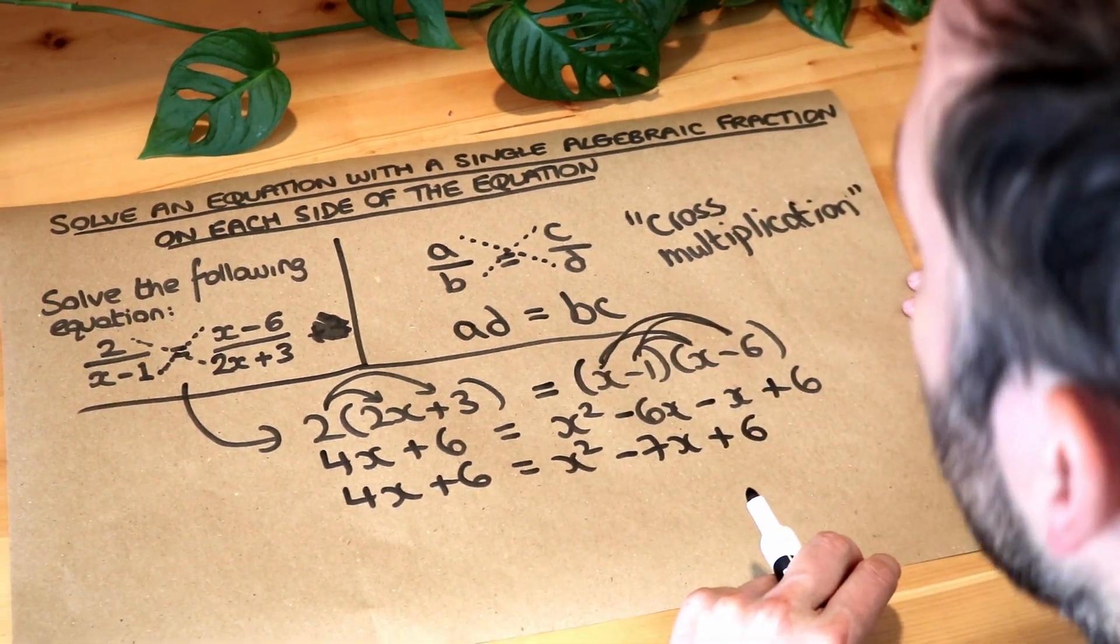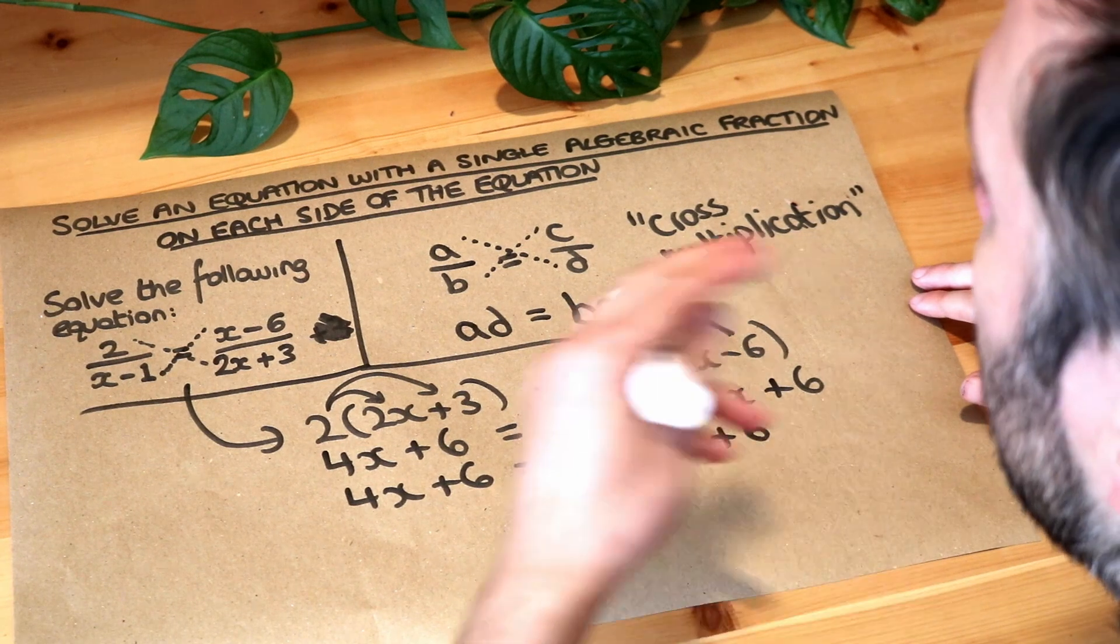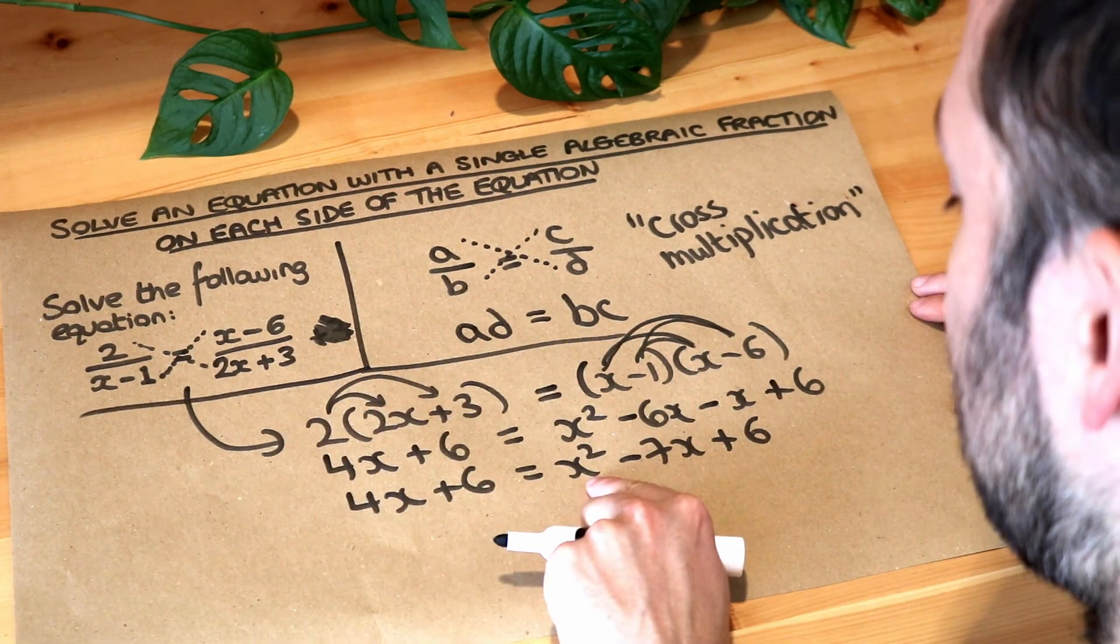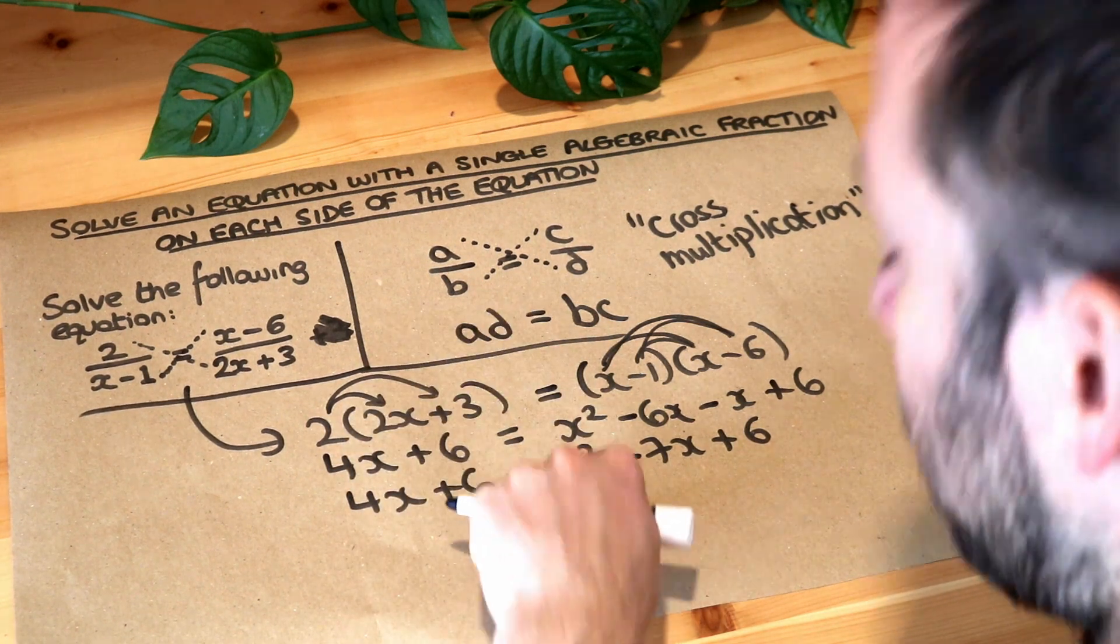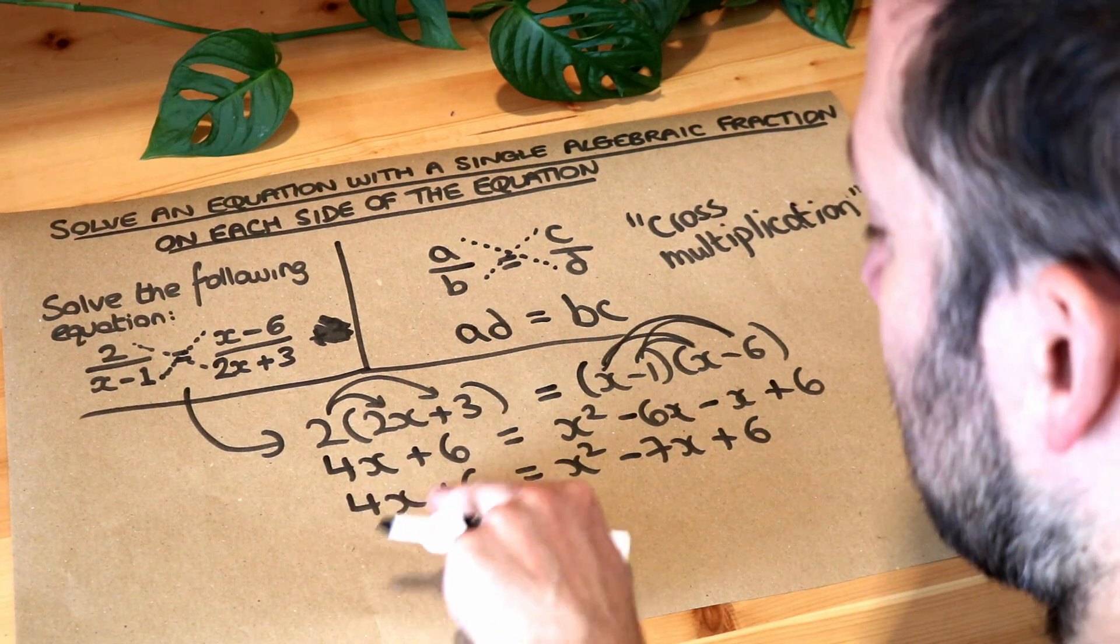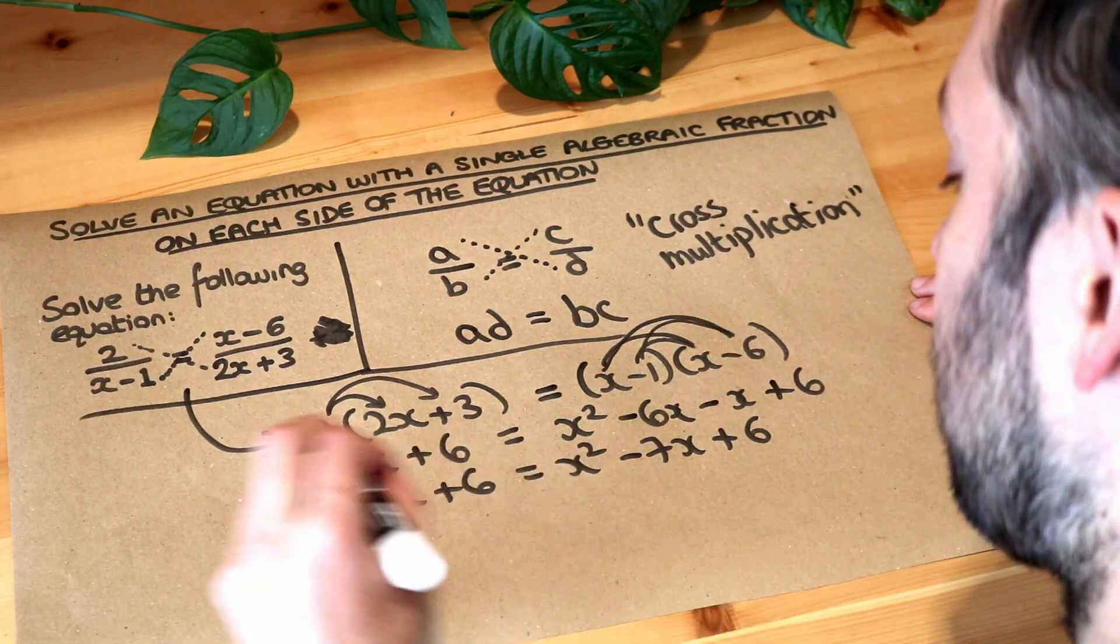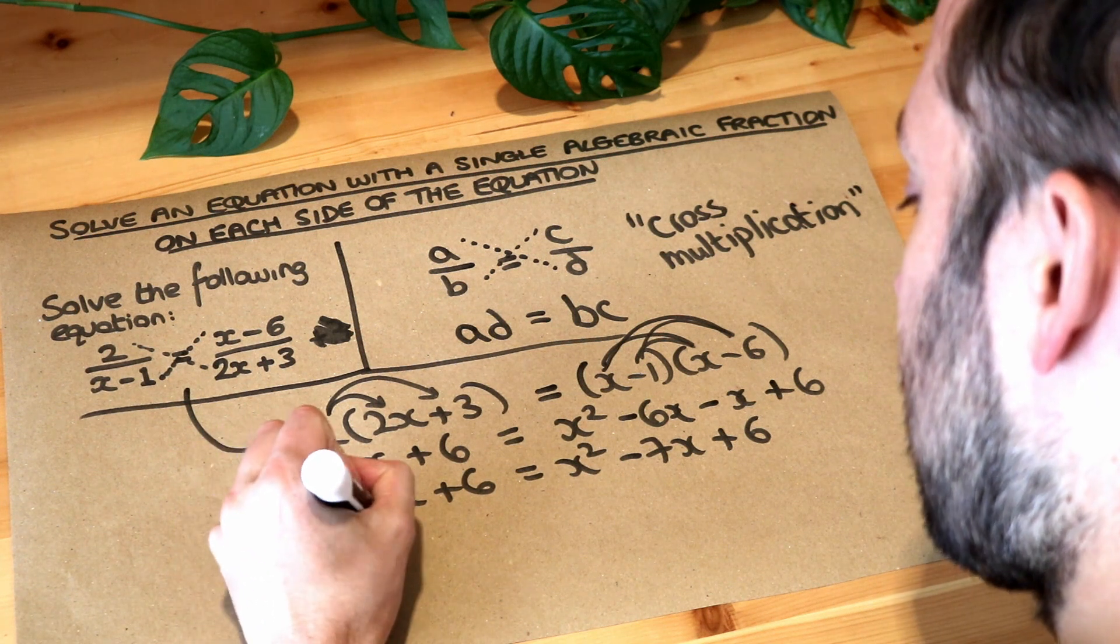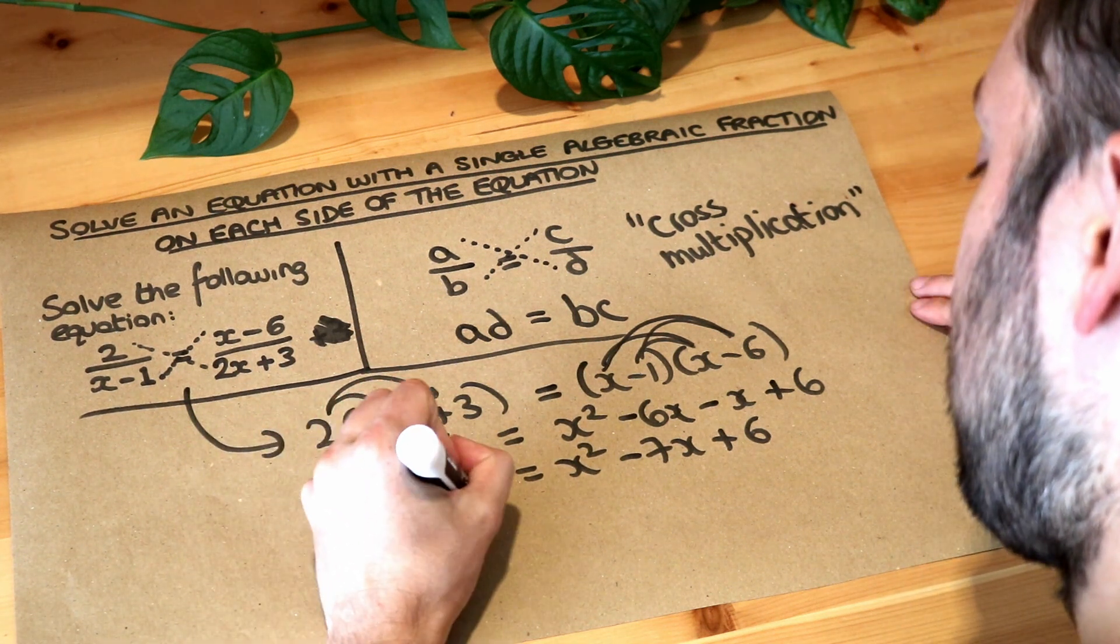Now remember to solve a quadratic equation we want to get everything on the side where the x squared term is positive. Now the x squared term is positive because it's 1 positive x squared, so therefore we want everything on this side. So we need to get rid of these terms to leave 0 on the other side of the equation. So I'm going to minus 4x and I'm also going to minus 6 from both sides.